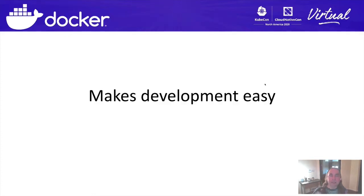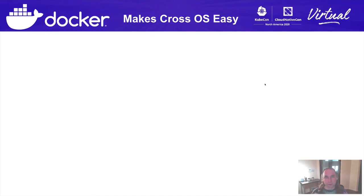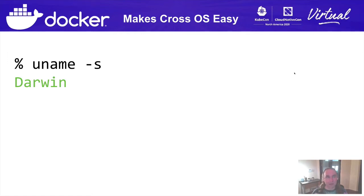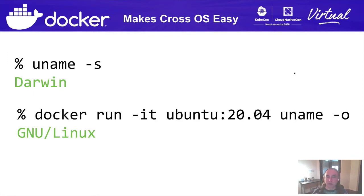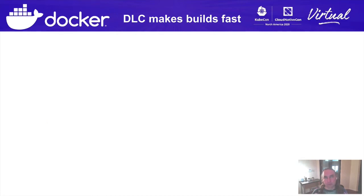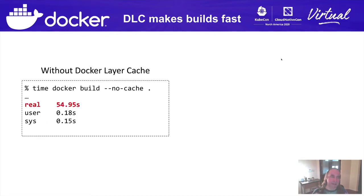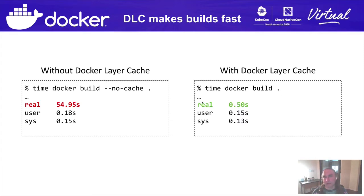Docker also makes development easy. It makes cross-OS work easy — I can literally start on my Mac laptop and use Docker to gain access to an Ubuntu 20.04 development environment trivially in a single command line. And Docker layer caching makes builds fast. A project I work on that takes 54 seconds to build comes down to 0.5 seconds — very nearly a 100x speed up.